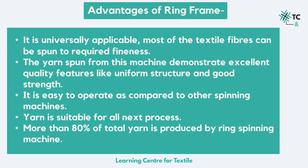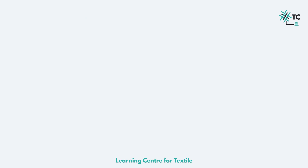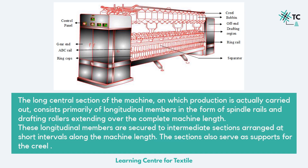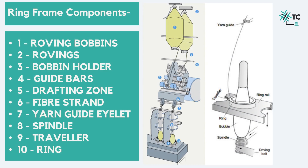Now let us move on to see how the process is done, what are the different components, zones, etc. We will discuss the longitudinal members present throughout the machine length — these are the ring frame parts and components involved in the process. Now what is the process flow? The two yellow bobbins that you see at the top are the roving bobbins, which is the output material of the speed frame. They are labeled as number one.